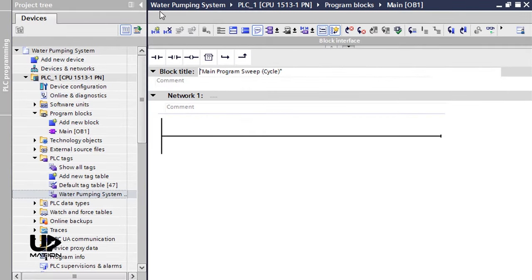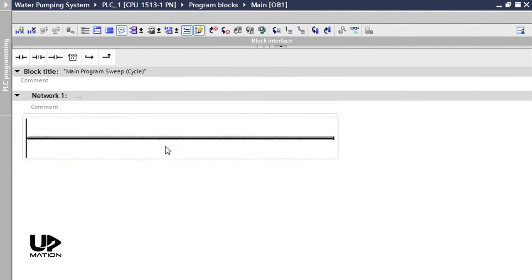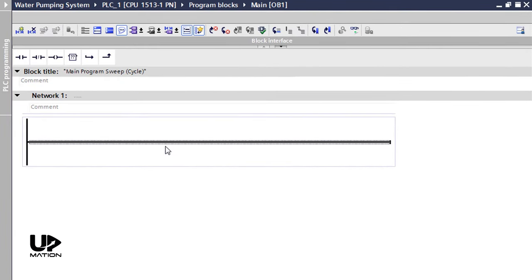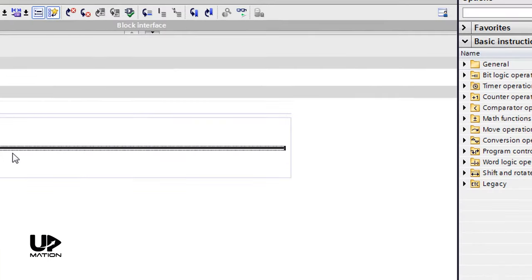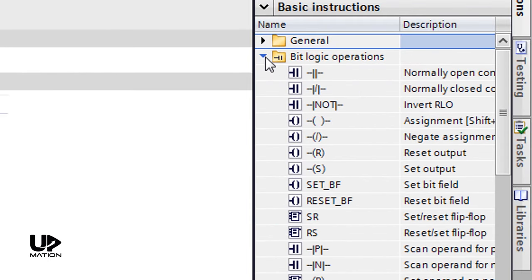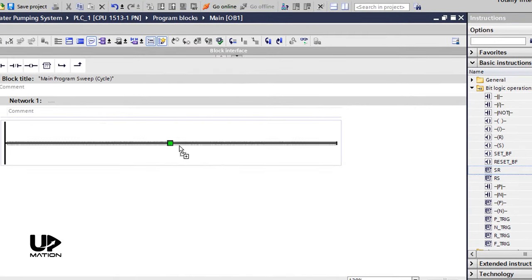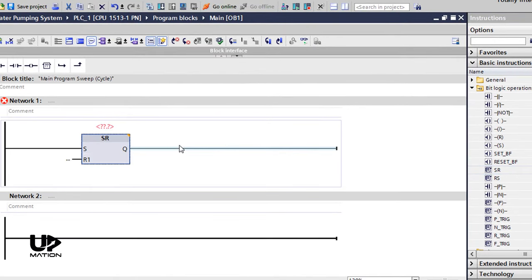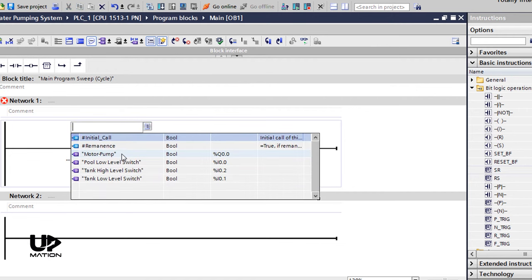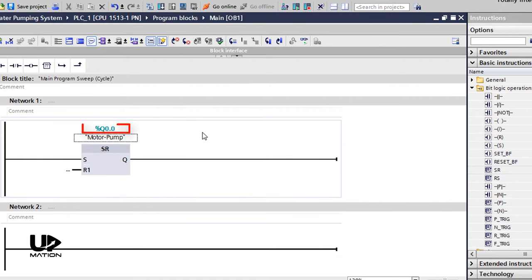Now let's get back to the OB1 environment to start our programming. The simplest way to write this program is to use a flip-flop for starting and stopping this electric motor. If you have any alternative ideas, please share them in the comments. I will expand the BitLogic Operations folder and add an SR flip-flop from there by dragging and dropping it to Network1. I then double-click over these question marks and will assign the Motor-Pump or Q0.0 to that.